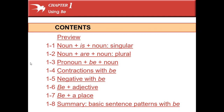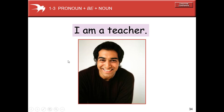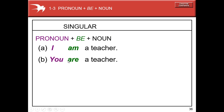Hello everyone, welcome to E-Lab. I'm Monica, and this is 5-Minute English with the verb 'to be'. This time we'll cover: pronoun plus be plus noun, contractions with the verb to be, negatives with the verb to be, be plus adjective, be plus a place, and a summary of the basic patterns. Let's go!